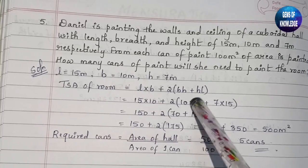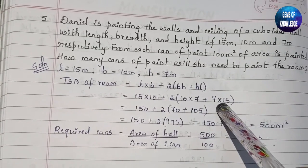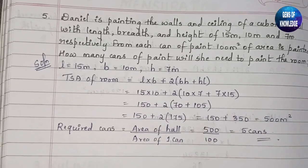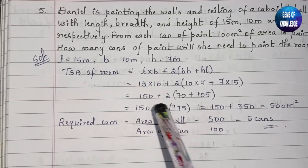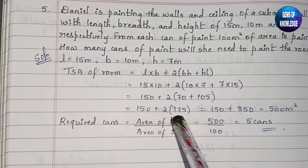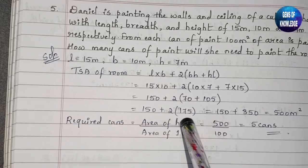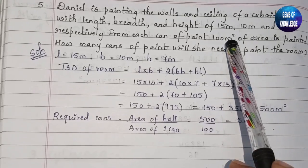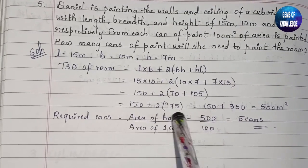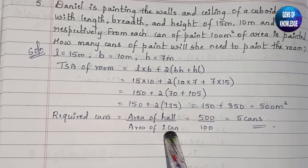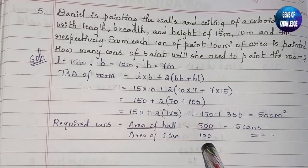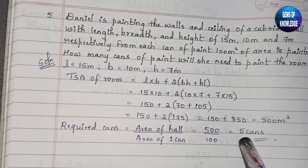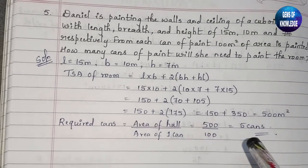Substituting: 15×10 + 2(10×7 + 7×15) = 150 + 2(70 + 105) = 150 + 2(175) = 150 + 350 = 500 m². Number of cans required = area of hall ÷ area per can = 500 ÷ 100 = 5 cans. So 5 cans of paint are required.